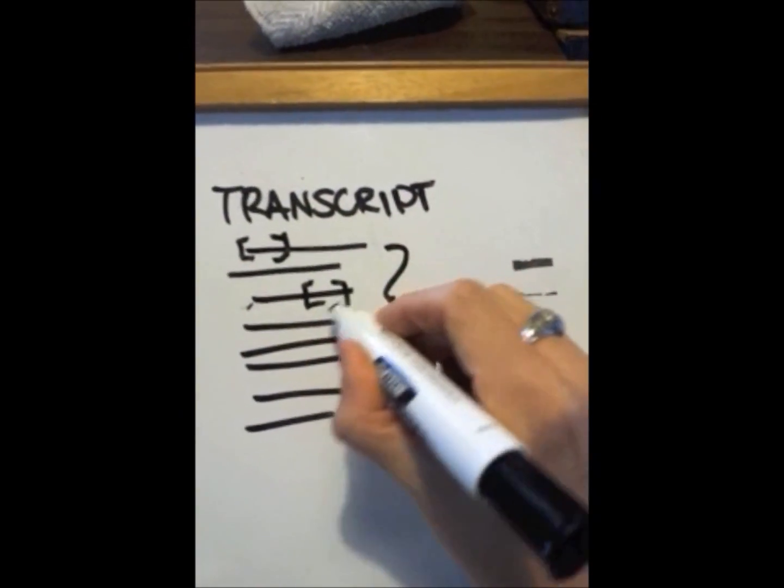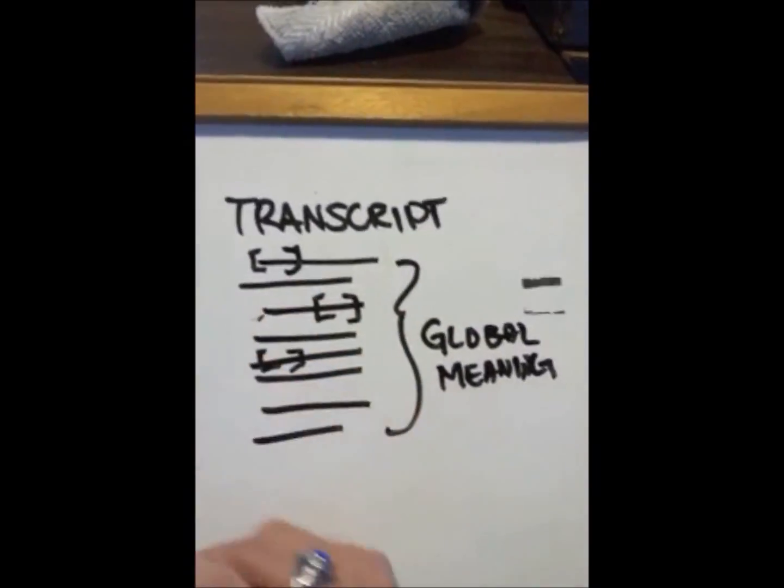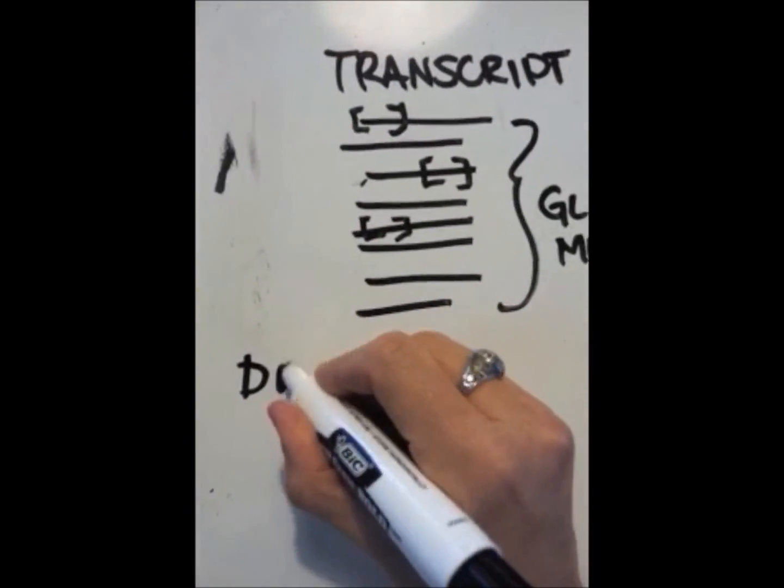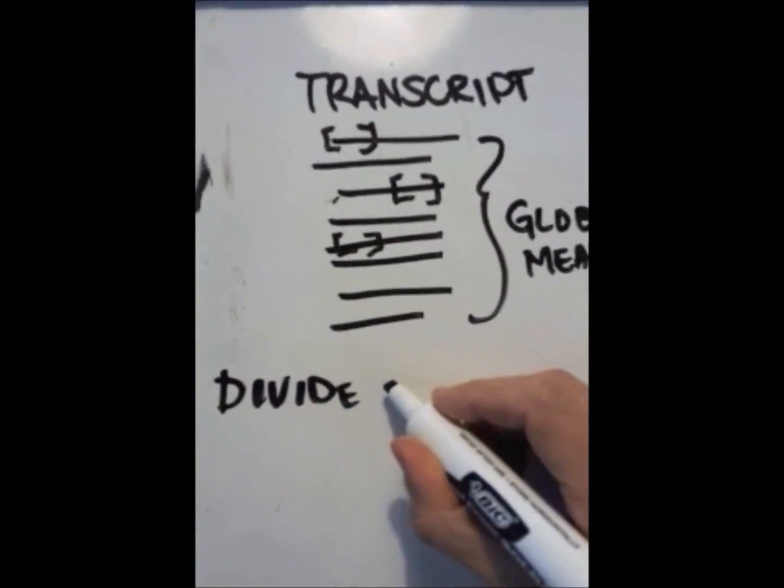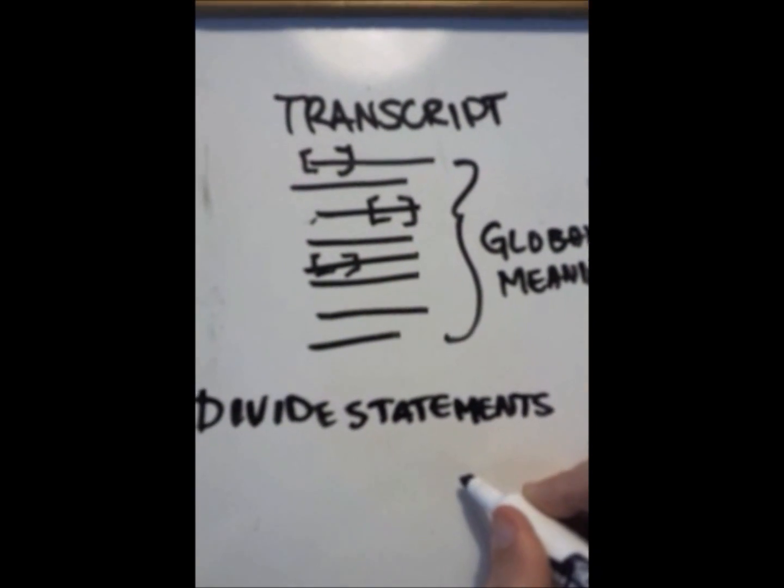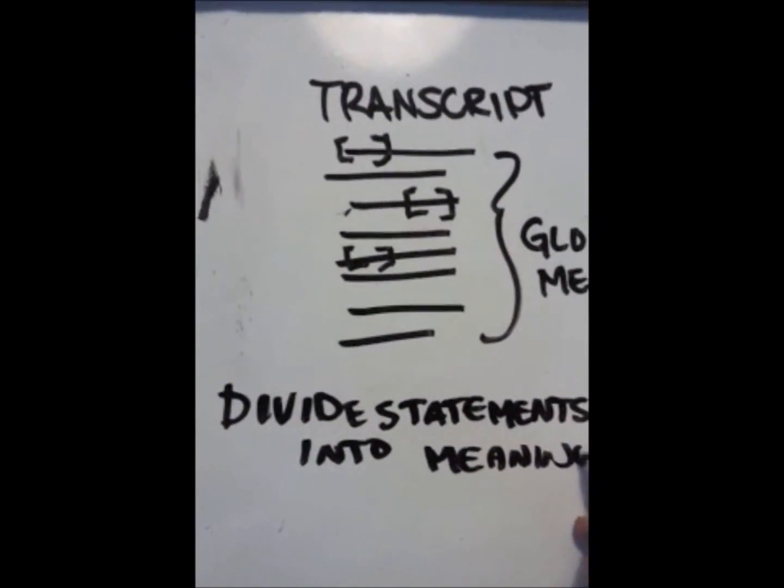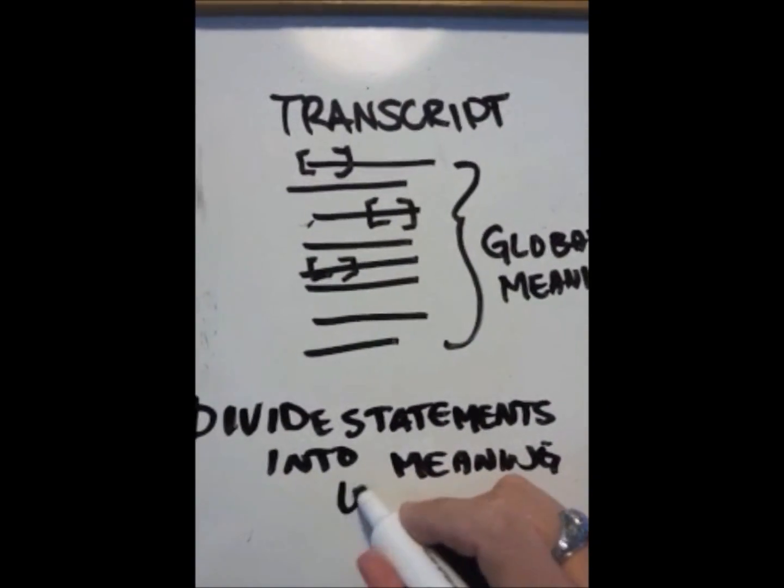If one is conducting descriptive phenomenology, the next step is to read the interview and to highlight and divide statements into meaningful units or significant statements. Those units are then integrated based on similarities or grouped by themes, and the researcher develops clusters of meaning.